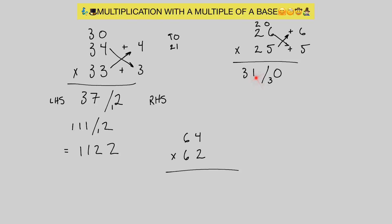Before we do our carries, we need to remember we're working off a base 20, so we need to multiply 31 by 2. 31 times 2 gives us 62, and then we still have this 30 written as small 3 and big 0. Now we can carry the 3 over, and we get our answer of 650.